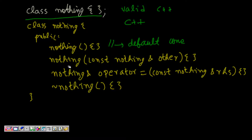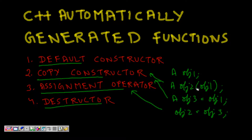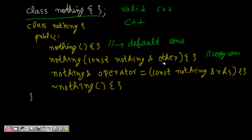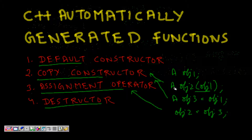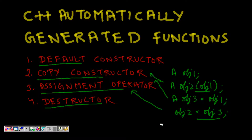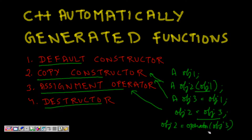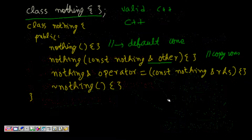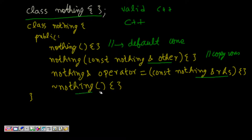Then C++ generates the copy constructor: 'nothing(const nothing& other)'. This is what gets called when you write 'A object2(object1)' — object1 is passed by reference. Then the assignment operator is generated — 'object2 = object3' calls operator overloading, passing object3 as the argument. And lastly, the destructor is generated. These are all the things generated automatically for 'class nothing'.